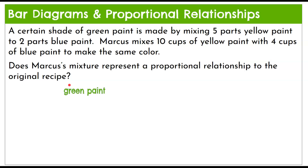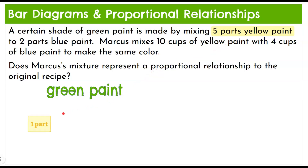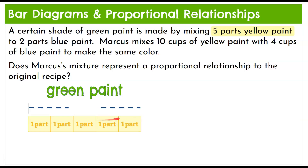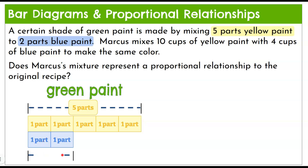Let's start with our bar diagram for the original recipe. They tell us we need five parts of yellow paint, so we make a bar diagram with five equal boxes representing each of the five parts — a total of five parts for yellow paint. The second quantity is two parts of blue paint, so we'll have two boxes representing our two parts of blue paint. When we mix this together, we get a specific shade of green paint.